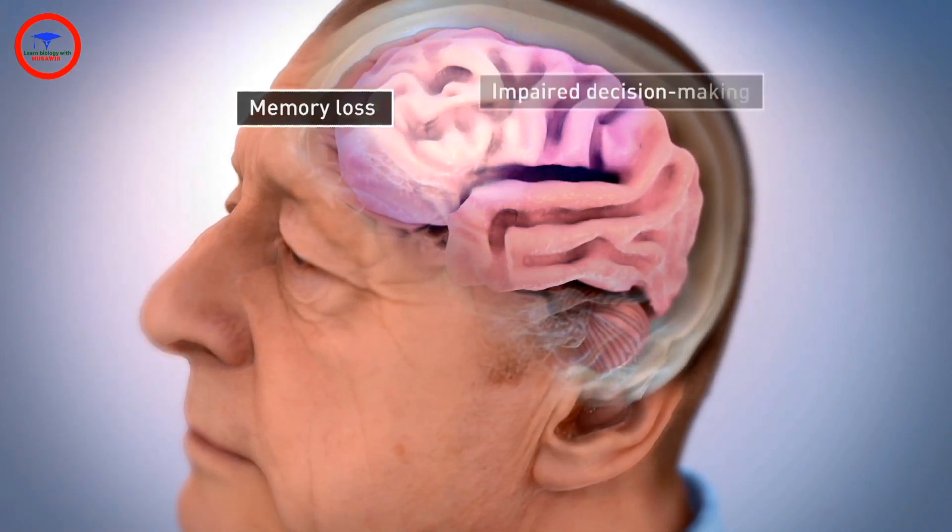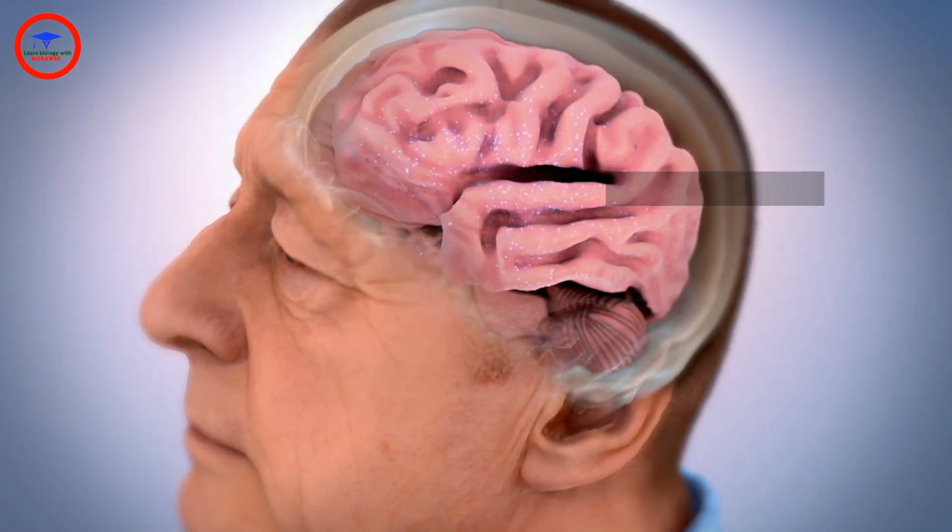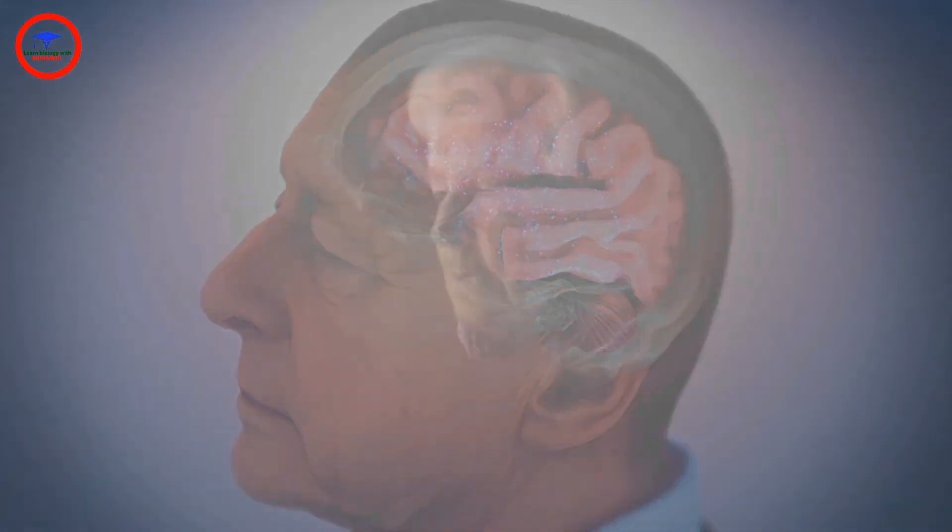People may begin to experience memory loss, impaired decision-making, and language problems. As more neurons die throughout the brain, a person with Alzheimer's gradually loses the ability to think, remember, make decisions, and function independently.